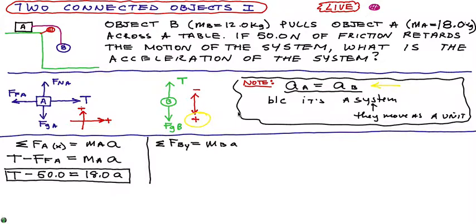We have sum of FB and that's equal to MB times A. I guess we're going to look in the y direction. So FBy. And we have two forces acting on B in the y direction. In the positive direction, we have FGB minus tension.